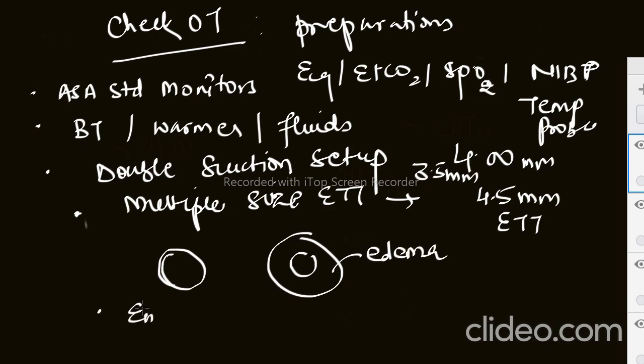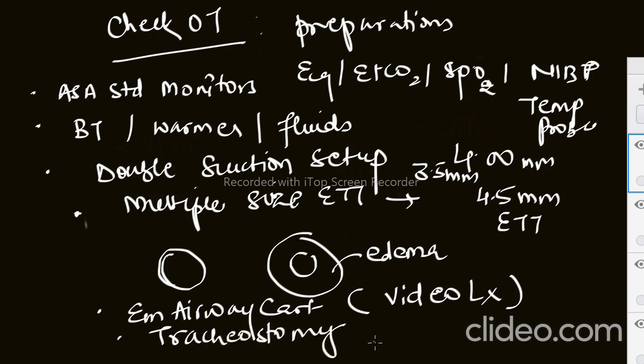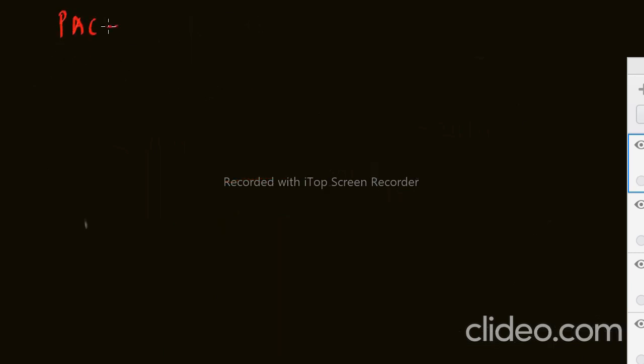Emergency airway cart should be ready which includes video laryngoscope, etc. Tracheostomy set should be kept ready and temperature of the OT should be optimized. Before taking the patient into the OT, you should be prepared with these things. The most important among them is multiple size ET, warmer for hypothermia, double suction setup, and tracheostomy in case you are not able to intubate the patient. Now you have done the PAC, checked your OT, checked all the instruments and reports.